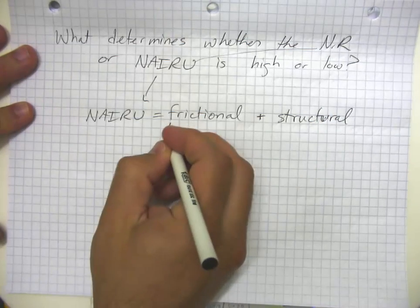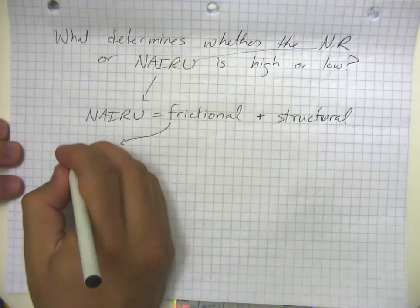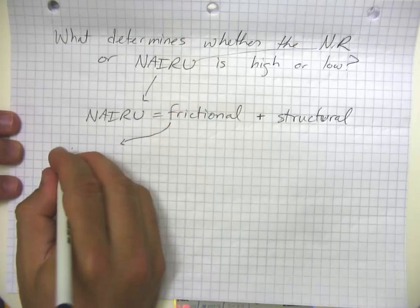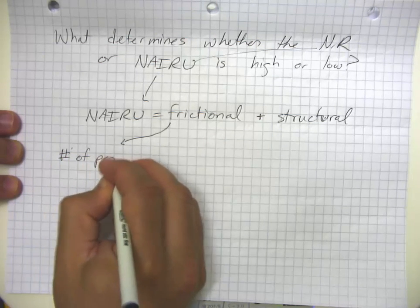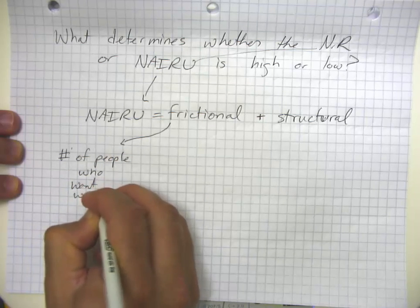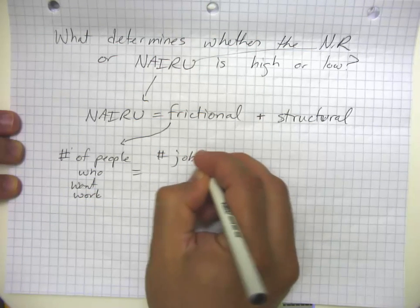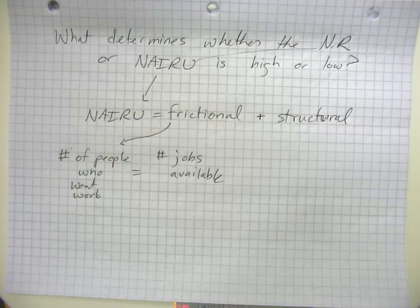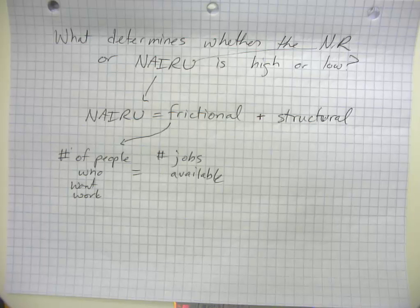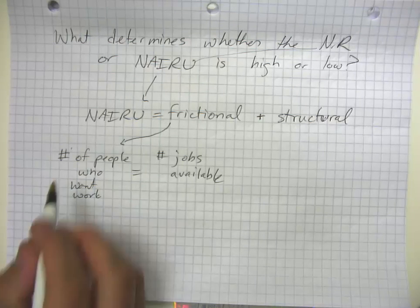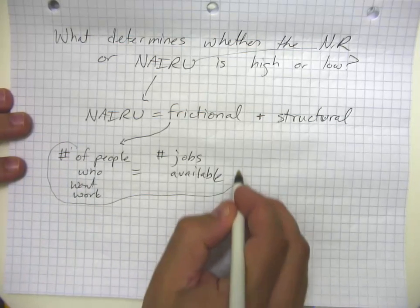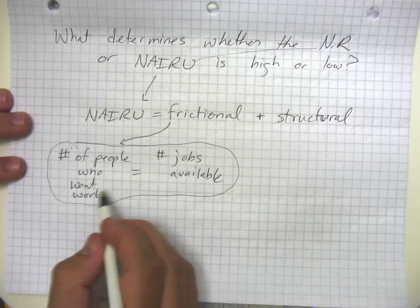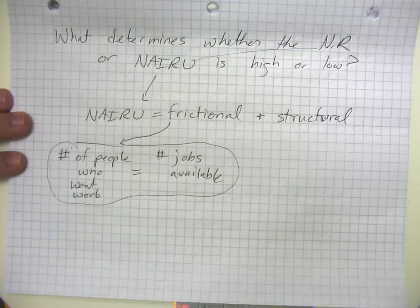The kind of unemployment that economists don't worry about as much is called frictional unemployment. This refers to a situation where the number of people wanting to work matches up with the number of jobs available, but it just takes time for people to find that match. By analogy, imagine a small village where everyone wants to get married and the number of men and women is equal, but it takes time to find that certain someone — so there's always some population of single adults. Frictional unemployment by its nature tends to be short-lived, because there's no persistent mismatch between the number of people who want work and the number of jobs available.